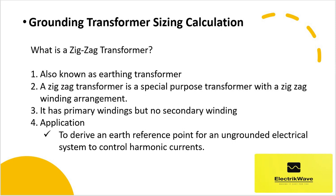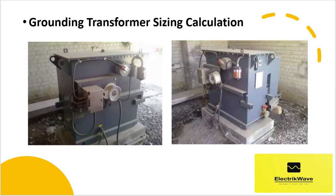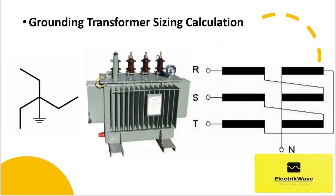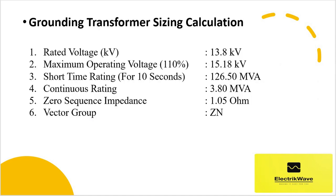A zigzag grounding transformer is used to derive an earth reference point for an ungrounded electrical system and to control harmonic currents. This is a photograph of the grounding transformer, and next is the pictorial representation of the grounding transformer — the MV side connection is through air bushings.